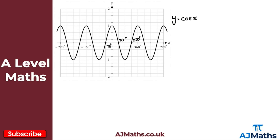Just like y equals sine x, cos x also has a maximum of one and a minimum of minus one. They are very similar. If you struggle to remember which is which, the way I like to remember is that y equals cos x begins at one — an initial height of one. So cos x equals one at x equals zero degrees, giving us our maximum.